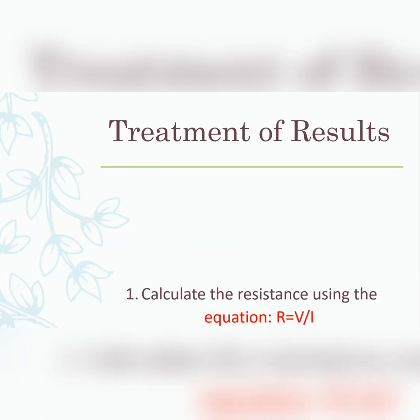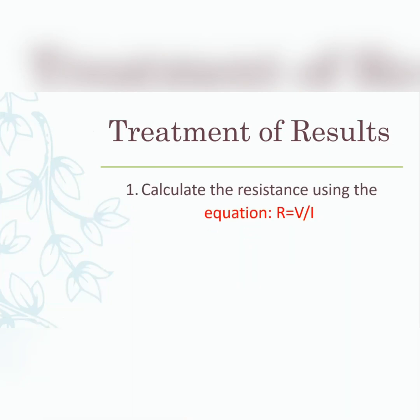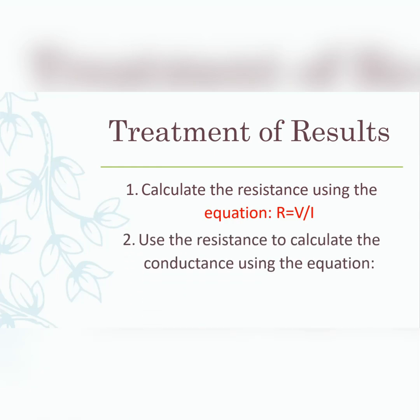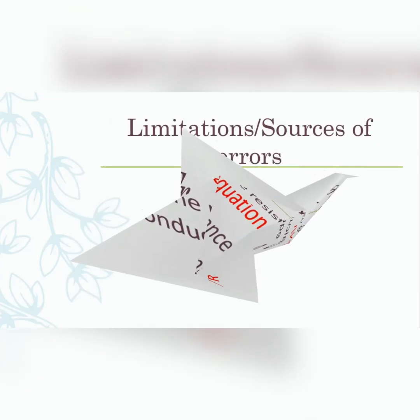For treatment of results, after getting your data, do sample calculations for resistance and conductance. Calculate resistance using R = V/I (resistance equals voltage over current), then calculate conductance using G = 1/R, where G is the symbol for conductance. Do a sample calculation and put those values in the data table.